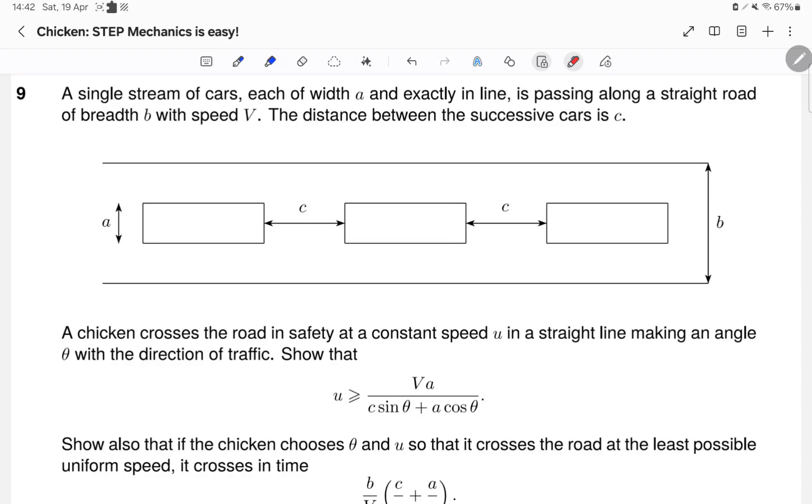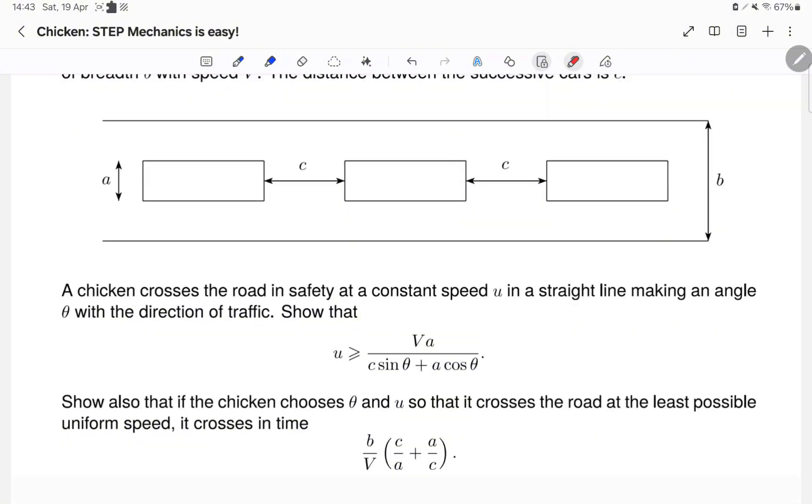A chicken crosses the road in safety at a constant speed U in a straight line making an angle theta with the direction of traffic. Show that U is greater than or equal to VA over C sine theta plus A cosine theta. Show also that if the chicken chooses theta and U so that it crosses the road at the least possible uniform speed, it crosses in time B over V of C over A plus A over C.